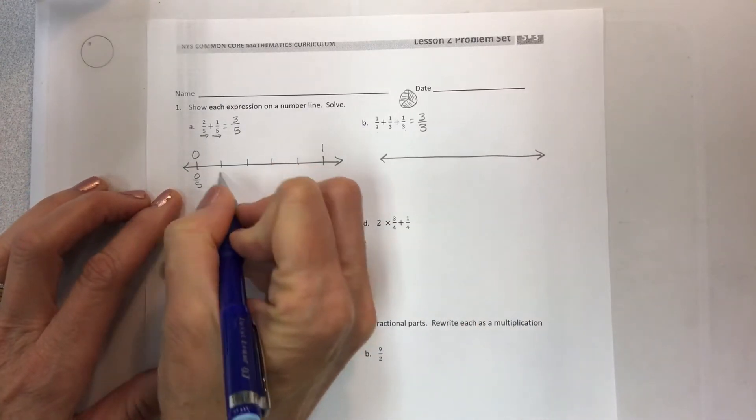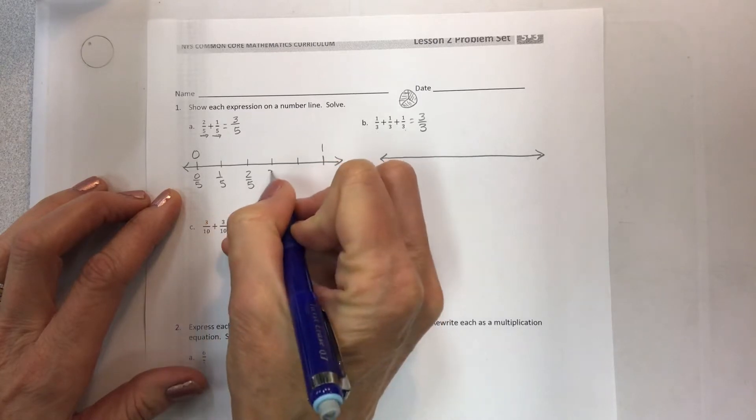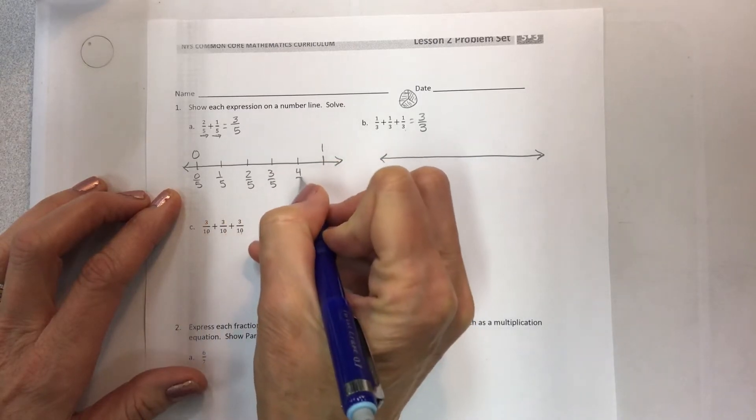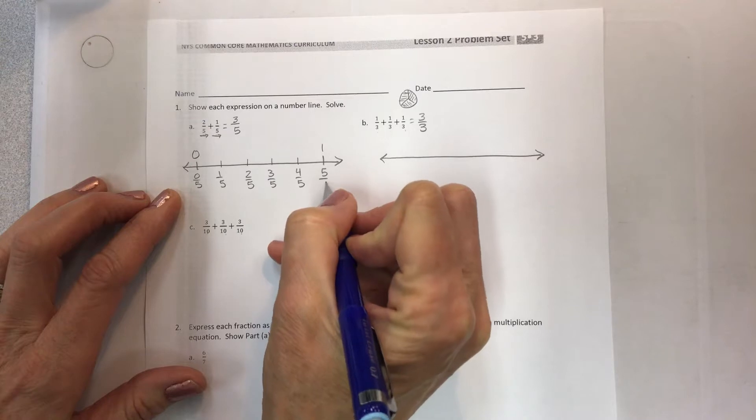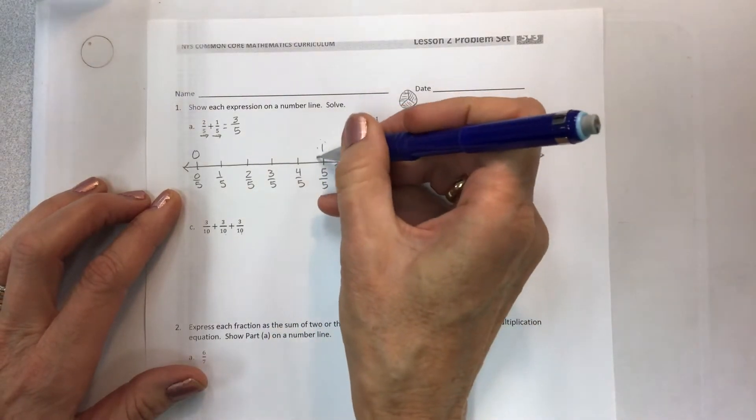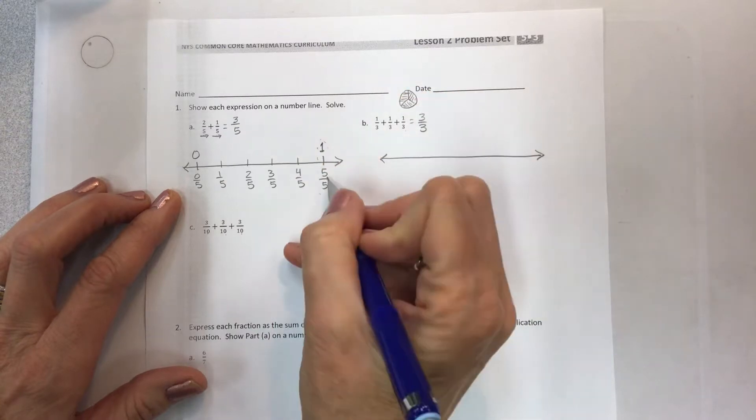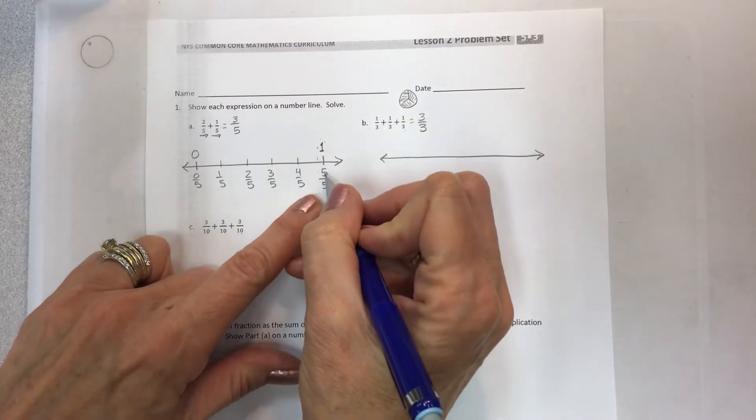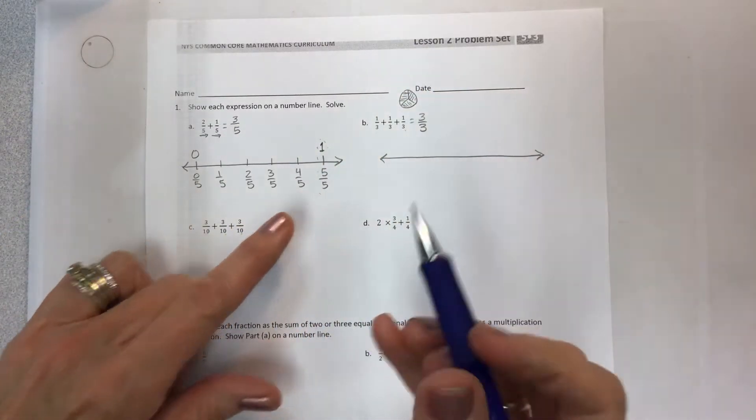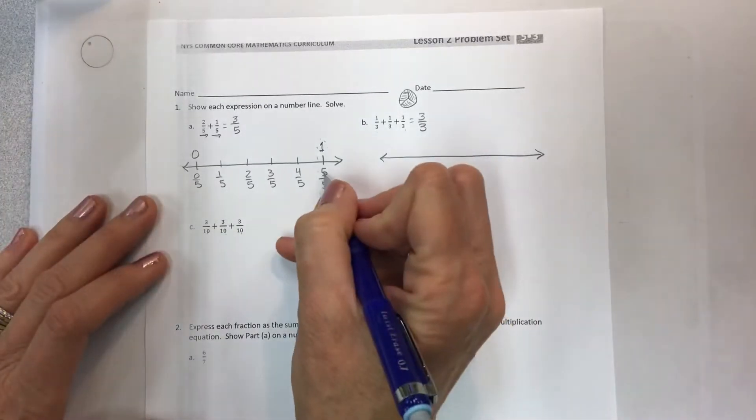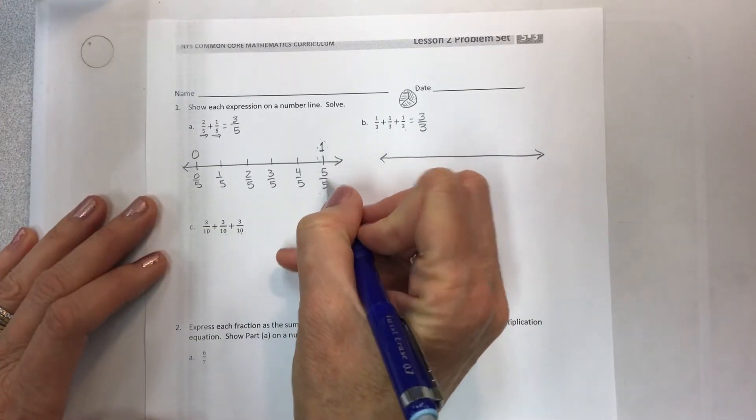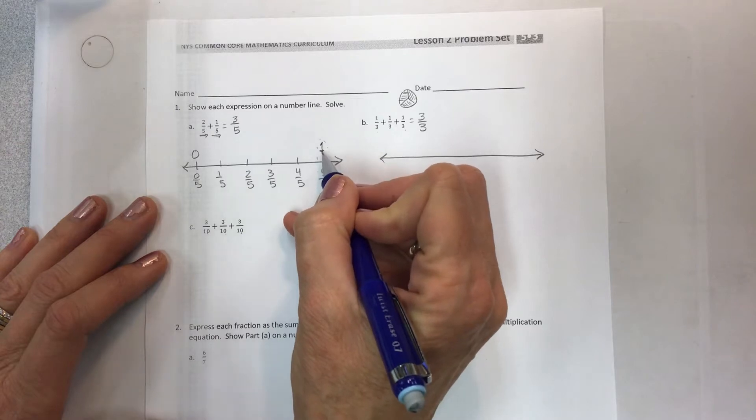So you make these marks along the number line. Zero fifths, one fifth, two fifths, three fifths, four fifths, and always double check that your number one, the whole number, will be the fraction over itself, the five over itself. Three thirds, two halves. It has to be the same on the top and the bottom in order to equal one whole.